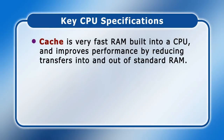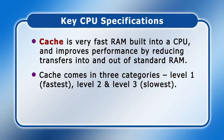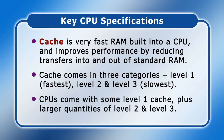Cache is a type of very fast RAM built into a CPU and improves its performance by reducing the requirement to transfer data into and out of standard RAM. CPU cache also comes in three categories known as Level 1, Level 2, and Level 3, with Level 1 being the fastest but also the most expensive. Modern CPUs come with some Level 1 cache, plus larger quantities of Level 2 and Level 3. However, many CPU listings only indicate a single cache value, and to keep things simple, I'm going to take that approach here.